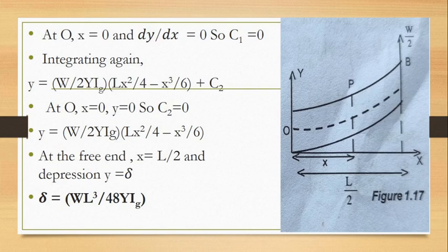Integrating dy/dx again, we get Y with another constant of integration C2. To find C2, we use the condition at O: X equals 0 and Y equals 0. Substituting these values, we find C2 equals 0. So Y equals W by 2YIG into (LX² by 4 minus X³ by 6).